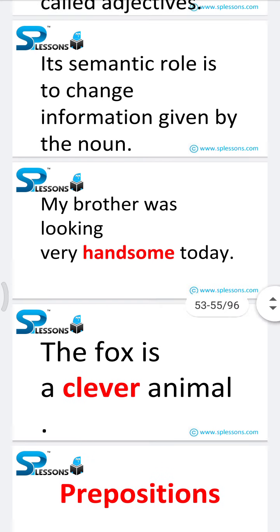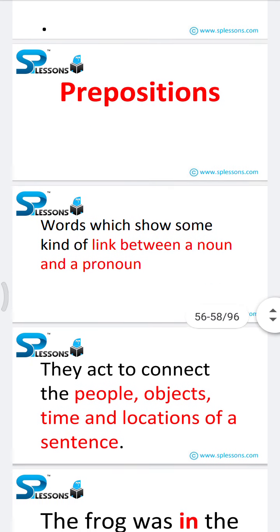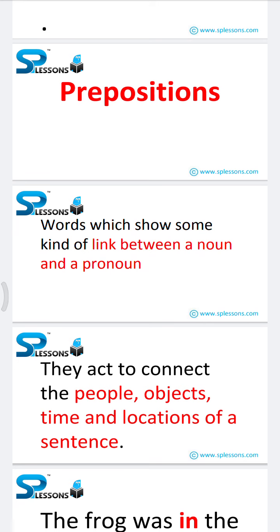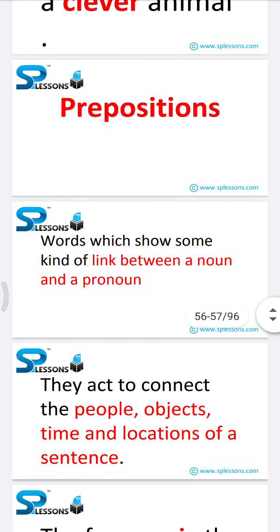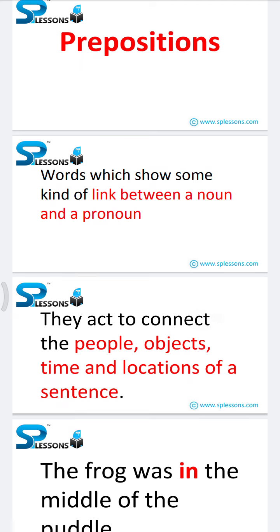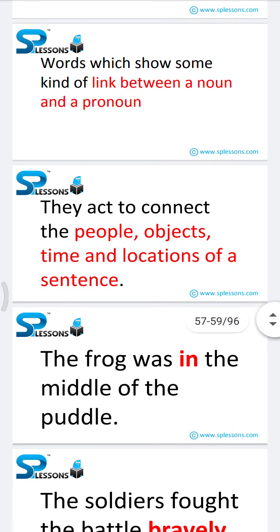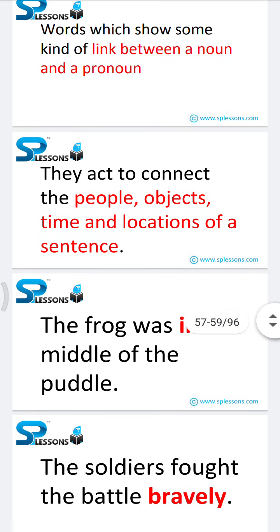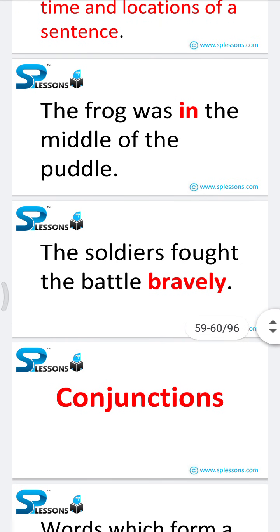Next is prepositions. Words which show a link between a noun and another noun are called prepositions. They act to connect people, objects, time, and locations within a sentence. 'The frog was in the middle of the puddle' — here 'in' is the preposition.